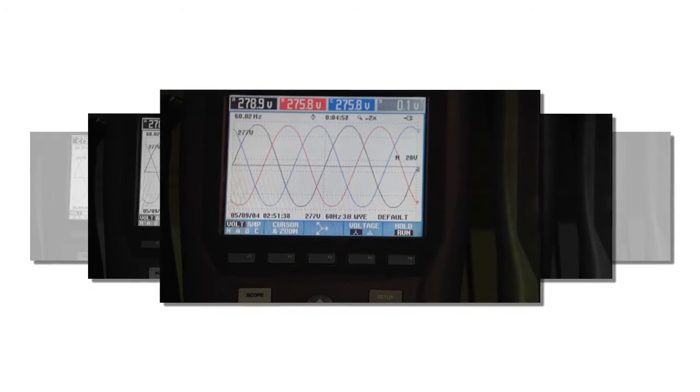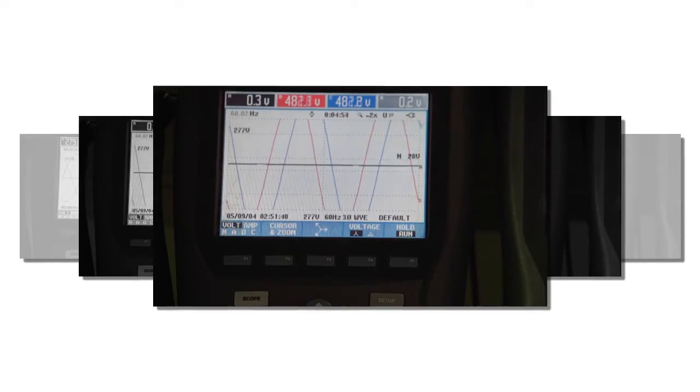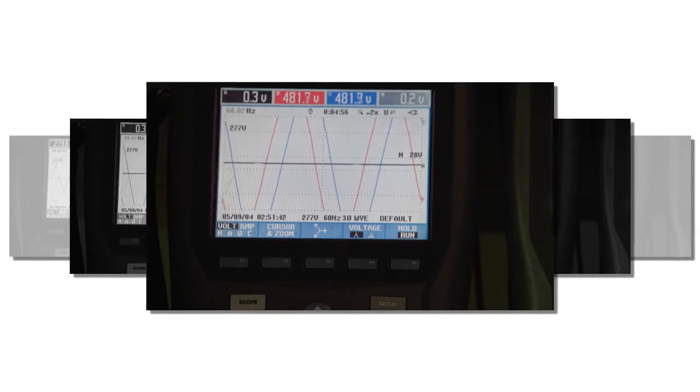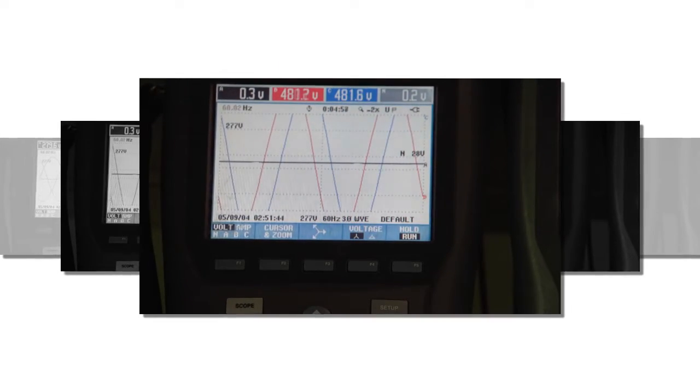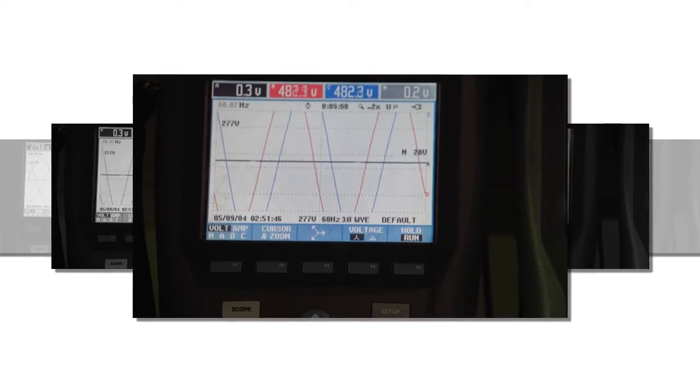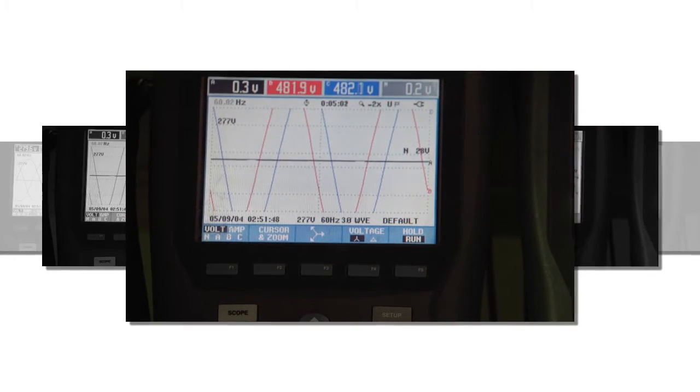During a ground fault condition, when phase A, for example, goes to ground, the other two phases go to the line-to-line voltage, in this case 480 volts. So it's like a corner-grounded delta system.